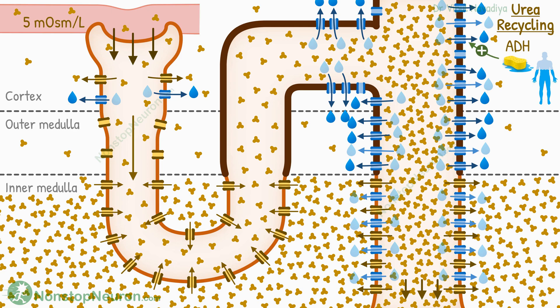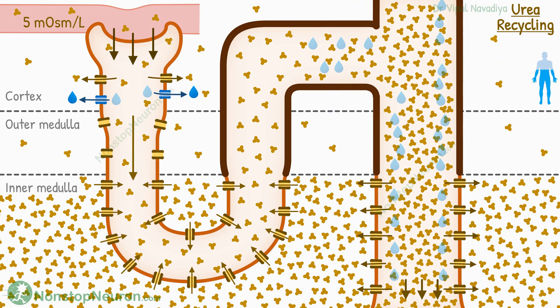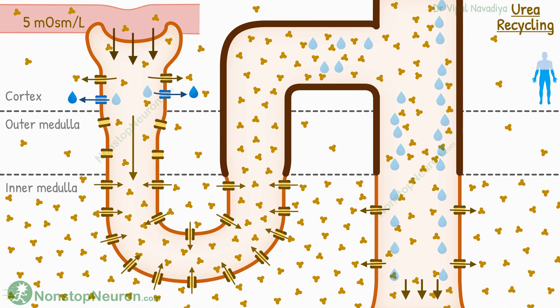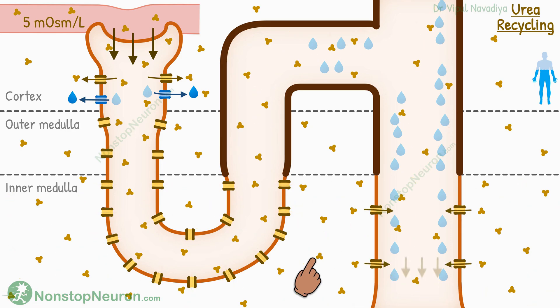Now, if the body has excess water, ADH level falls. In that case, the water permeability of the collecting duct decreases, so water reabsorption decreases, and the urea does not get concentrated as much in the tubule. Also, in the absence of ADH, the inner medullary collecting duct becomes less permeable to urea. Both these effects decrease urea reabsorption, so there is no further increase in interstitial urea concentration. Some of the urea accumulated in the interstitium is excreted, and some is washed out by the vasa recta, so eventually the medullary urea concentration also falls. Thus in water diuresis, urea does not contribute much to medullary hyperosmolarity — most contribution comes from sodium and chloride only.